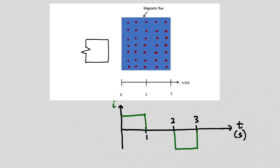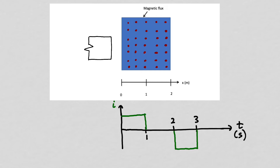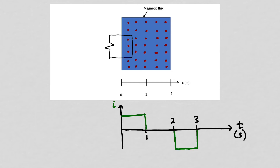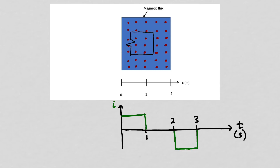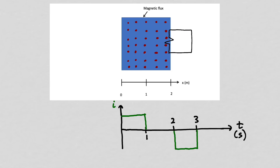If we consider a clockwise current as positive and assume the circuit is moving at one meter per second, with t equals zero being when it starts to enter, we will have a clockwise current flowing as shown in the graph. At one second the circuit is totally inside the magnetic flux region, so from one to two seconds there will be no current flowing, and from two to three seconds there will be a negative — counterclockwise — current, after which the current will be zero.